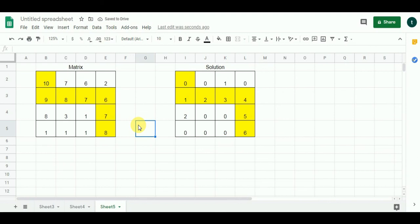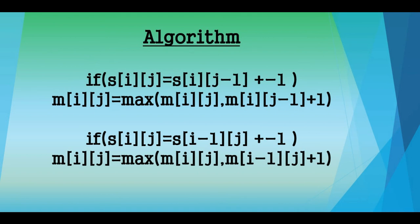Let's look at the algorithm for this dynamic programming solution. If S[i][j] equals S[i][j-1] plus or minus 1 — checking the condition from the problem matrix S — then M[i][j] = max(M[i][j], M[i][j-1] + 1). The second condition is if S[i][j] equals S[i-1][j] plus or minus 1 — checking the cell above — then M[i][j] = max(M[i][j], M[i-1][j] + 1). With this we have reached the end of the video.